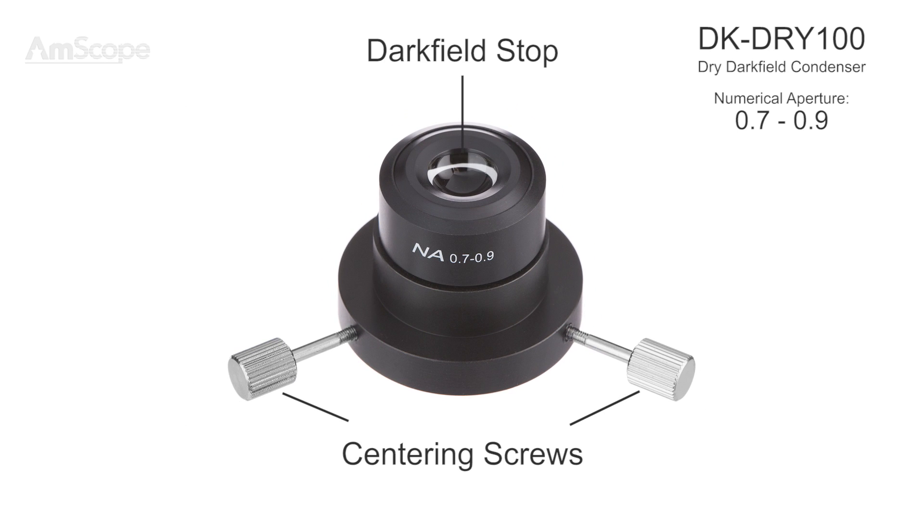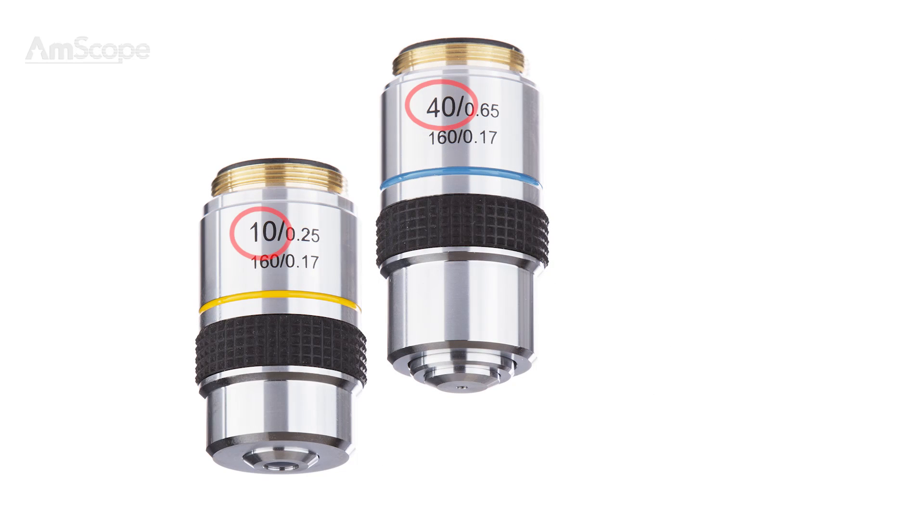There are two classes of condenser, dry and immersion. A dry condenser is designed to work with lower magnification objectives with lower numerical apertures. This typically covers objectives up to 40 times, with apertures of around 0.65 or less.